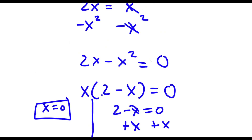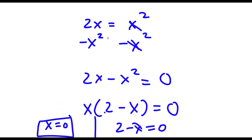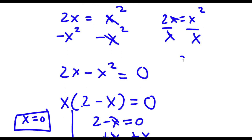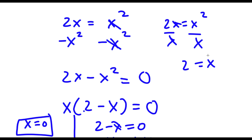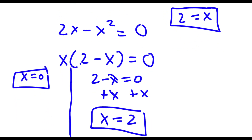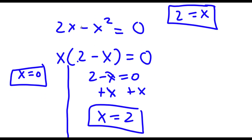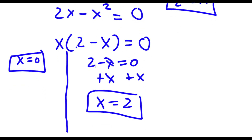Now going back, if you see here where I had 2x is equal to x squared — if I were to divide both sides by x, these two cancel out and I would simply be left with 2 is equal to x. So although this is a simpler version of solving this problem, the only solution I would get here is x equals 2, and I wouldn't know that x equals zero without having to subtract x squared on both sides, factor x out, and do all of this.